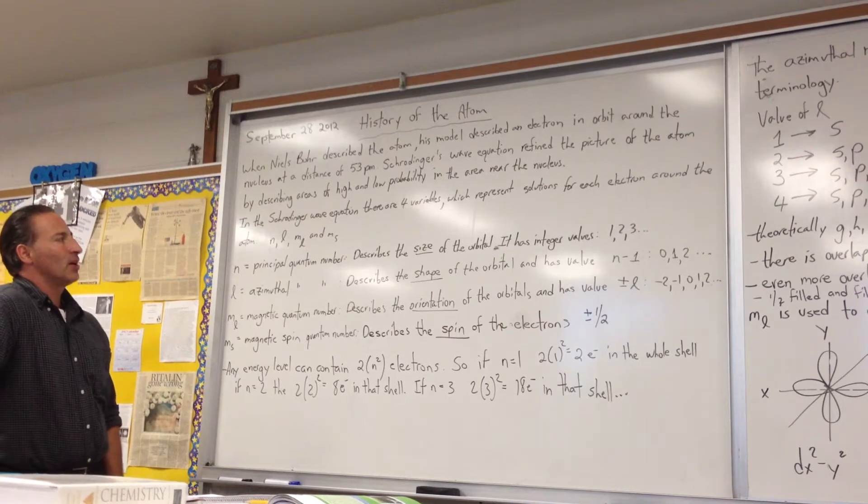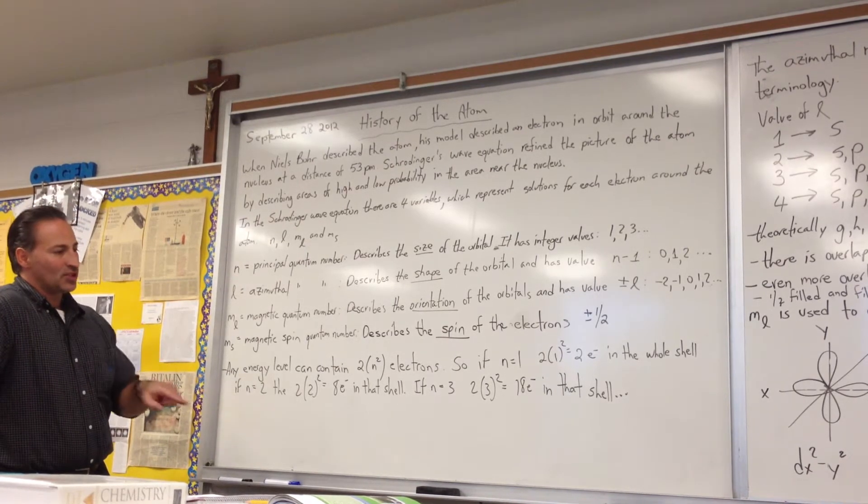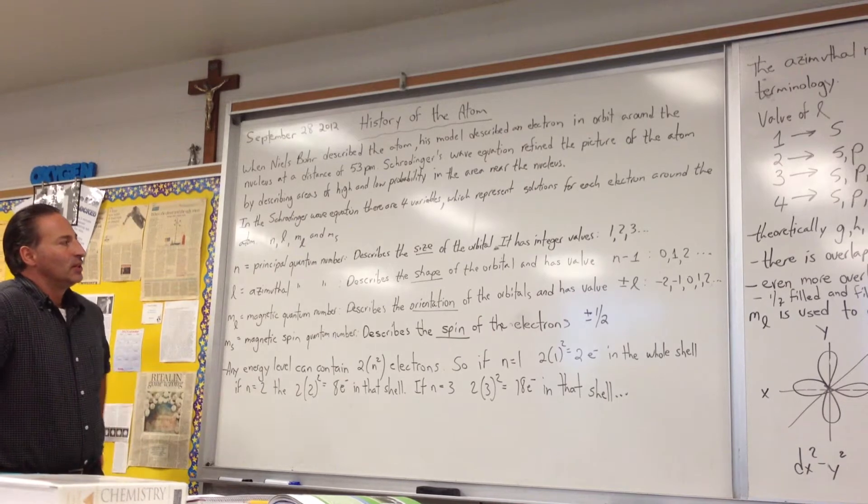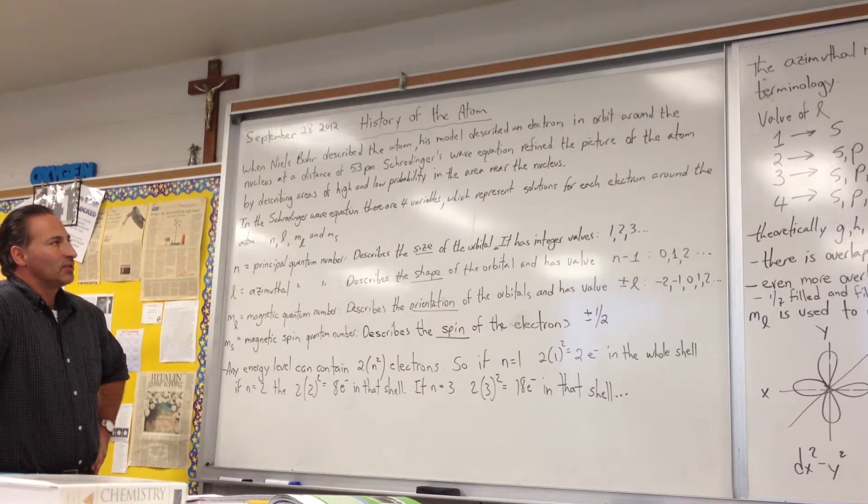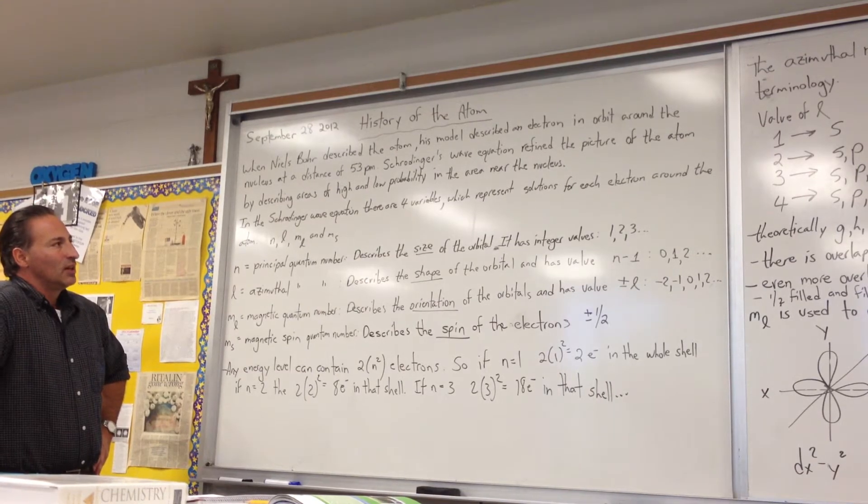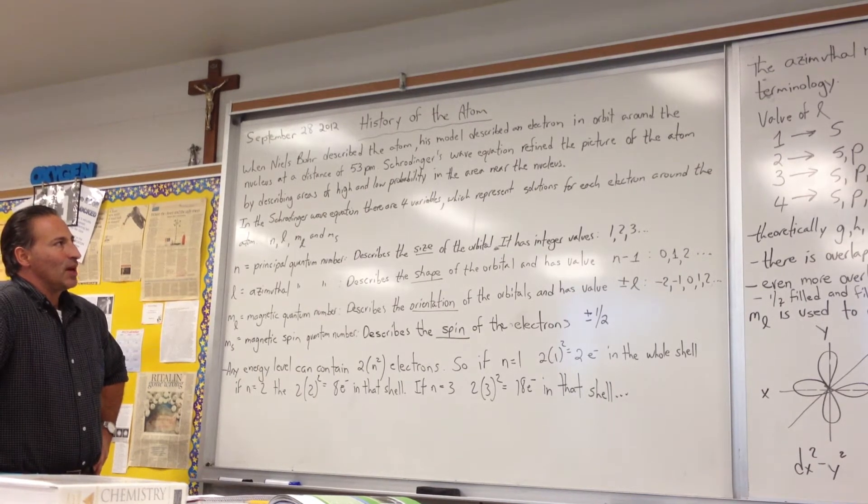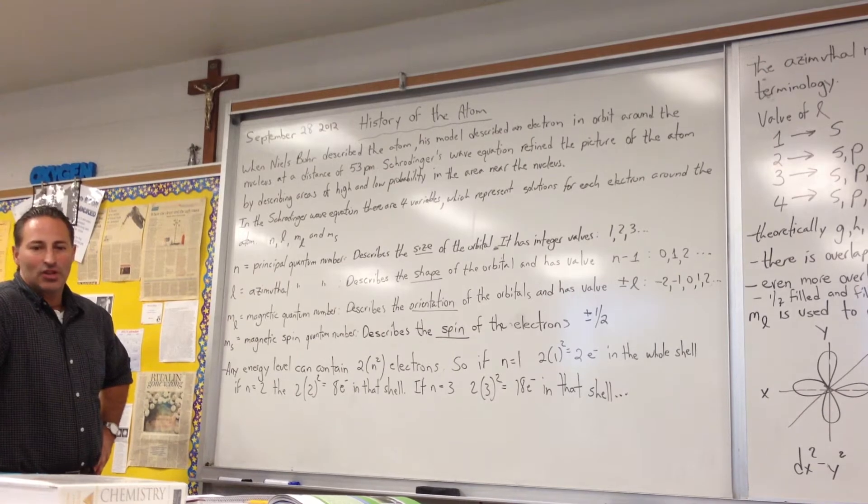We cannot have an electron going in a perfectly circular orbit around the proton because that would result in the emission of an electromagnetic wave due to the acceleration of a charged particle.